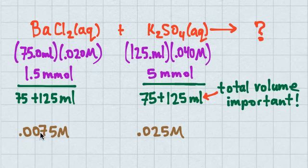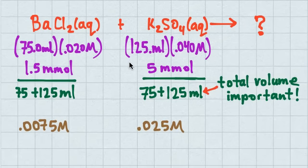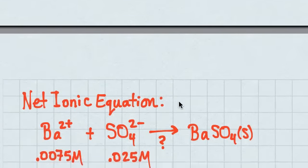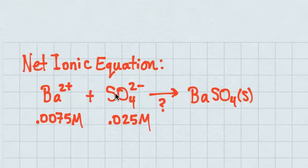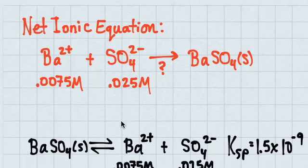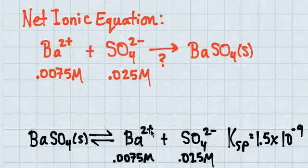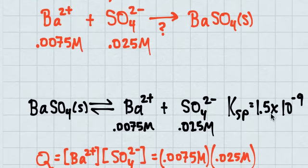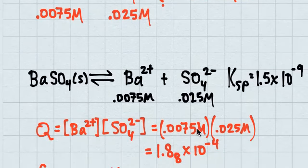Volume times molarity gives moles. The total volume is 75 + 125 = 200 mL. Since one barium chloride gives one barium ion and one potassium sulfate gives one sulfate ion, I can find molar concentrations. I look up the KSP from the back of the book and compare the two concentrations. Multiplying 0.0075 × 0.025 gives a number larger than KSP. So since Q is larger than KSP, they'll go back to create precipitation until the concentrations drop to equal KSP.